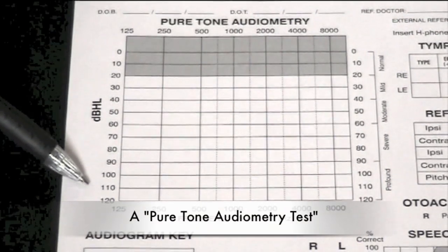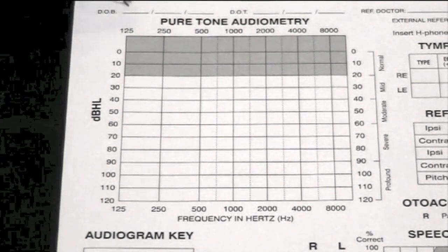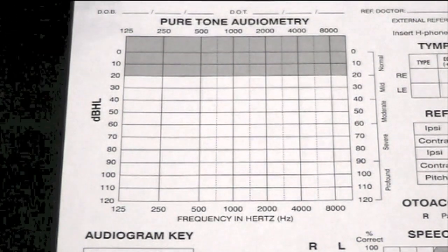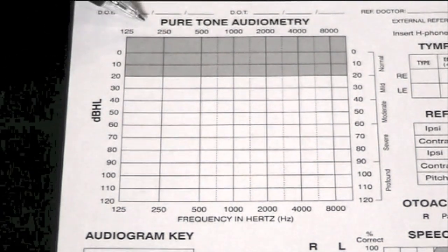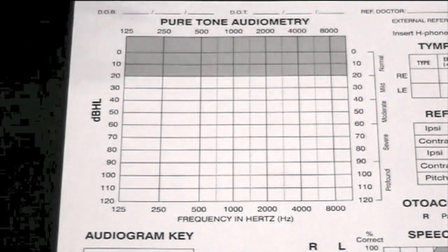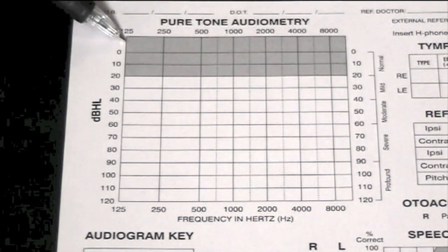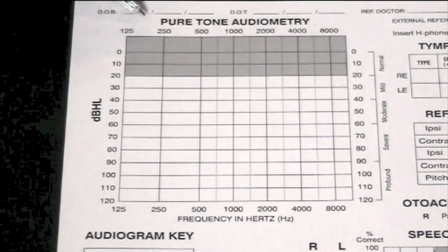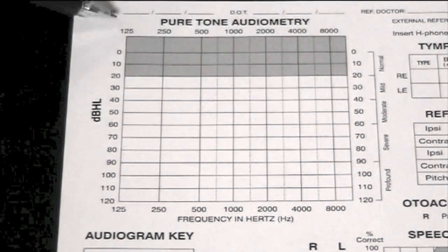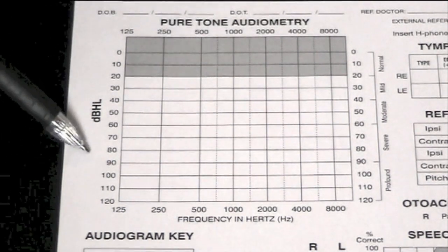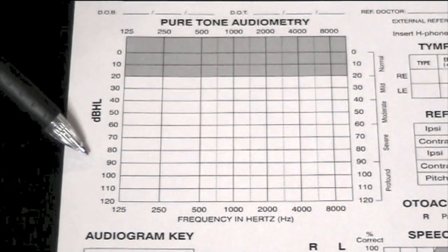Part of the hearing test process is we record your responses from the test along this graph. This is called an audiogram. Along the top you can see some numbers going from smaller to larger numbers. This refers to the frequency of the sound that you hear — so these are low pitch beeps all the way across to high pitch whistles. Down the side tells us how loud the sound needs to be in decibels before you can hear it.